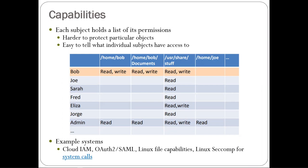Linux seccomp is a capability list specifying which system calls a program has access to — if a program should never do a fork or exec, you can specify that as capabilities attached to the process. Even in a system that does access control lists, some part of the permission policy may be done as capabilities. It's kind of a mix-and-match thing.